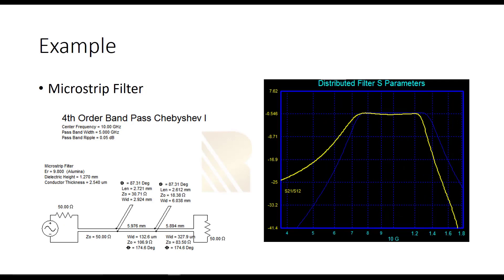And the last filter is microstrip filter. It's the fourth-order band pass temperature filter. The center frequency is 10 GHz with the pass band of 5 GHz. As you see, the bandwidth is 5 GHz. It's starting around 7 and goes up to 12. And we can make this filter using dielectric and the distributed elements here.